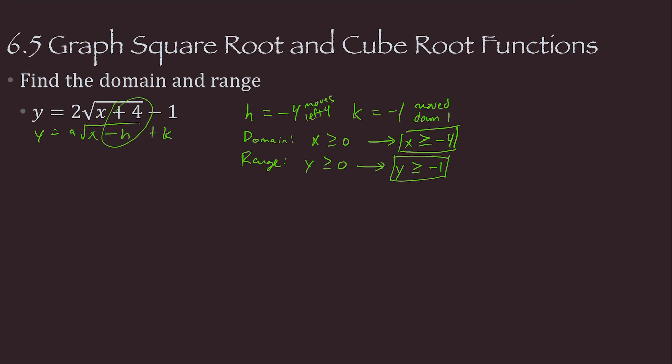So our range is y is greater than or equal to negative 1. So in general, for square root, the domain is x is greater than or equal to h, and the range is y is greater than or equal to k. That's if a is positive, or y is less than or equal to k if a is negative.